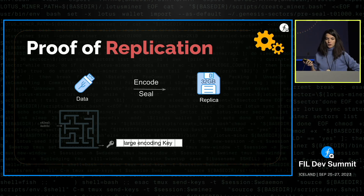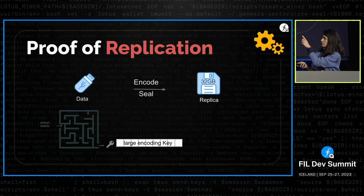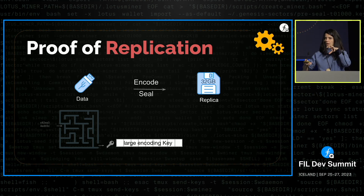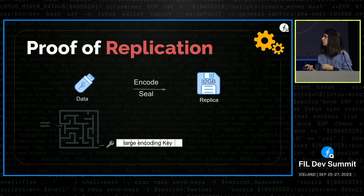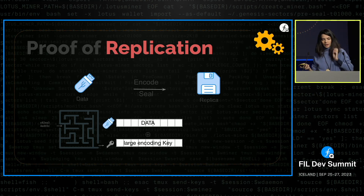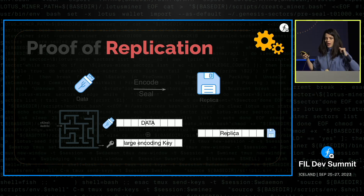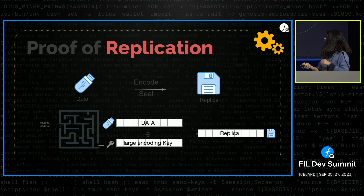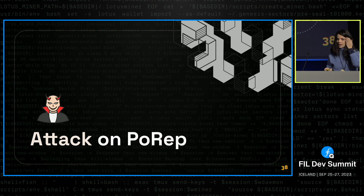In the sealing process, we take a replica ID — some small information — and perform a computationally heavy operation called labeling to compute a large encoding key. We use that key to seal the data: we add the data together with this large encoding key and obtain a replica of the data. What we commit to store is the replica.